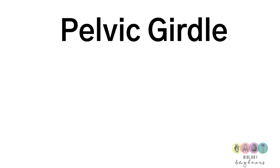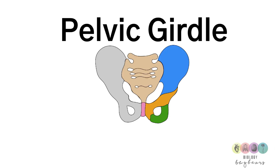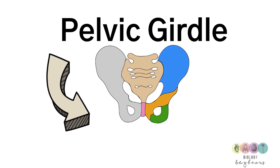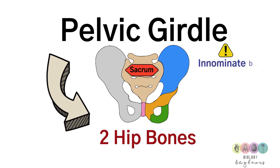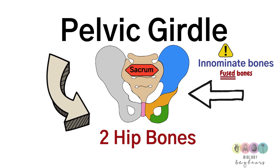Looking at the pelvic girdle — it is made up of two hip bones, and each of those hip bones is attached at the back to the sacrum, surrounding an open cavity. It's very important to know that the hip bones are also referred to as the innominate bones, and they are actually made up of three fused bones each.